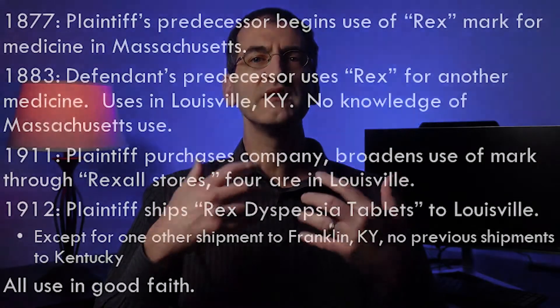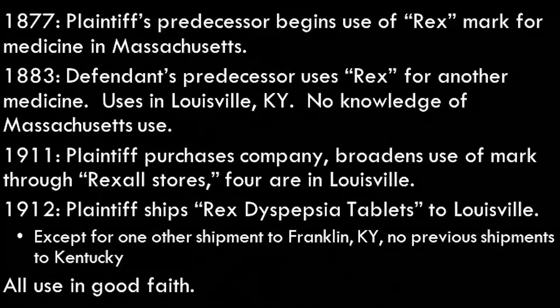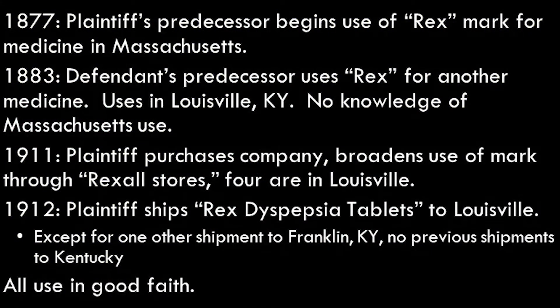This was a case presenting actual conflicting uses. In 1877, the plaintiff's predecessor in interest began use of the Rex mark for medicine in Massachusetts. In 1883, the defendant's predecessor was using Rex for another medicine in Louisville, Kentucky, and had no knowledge of the Massachusetts use.